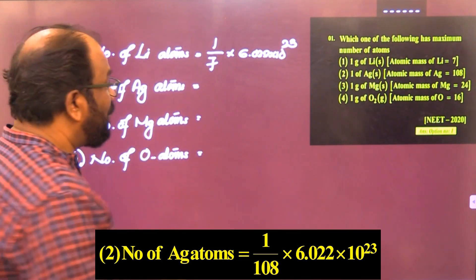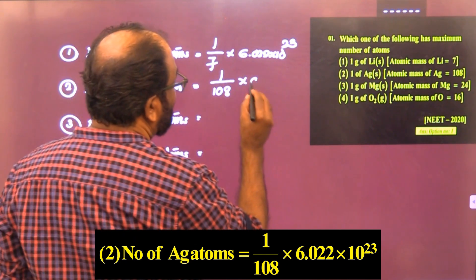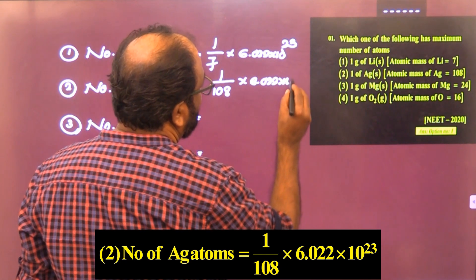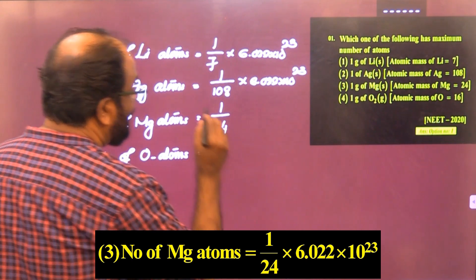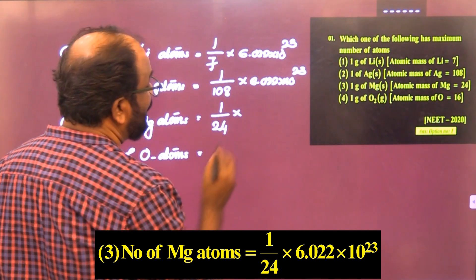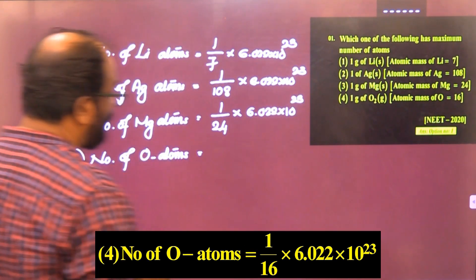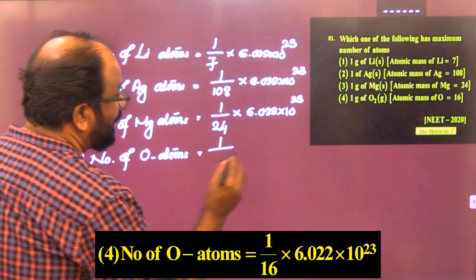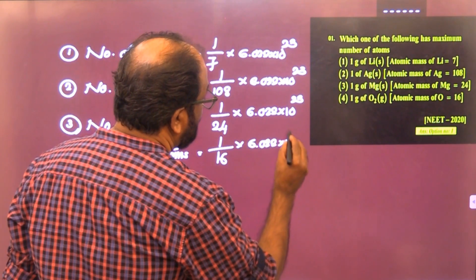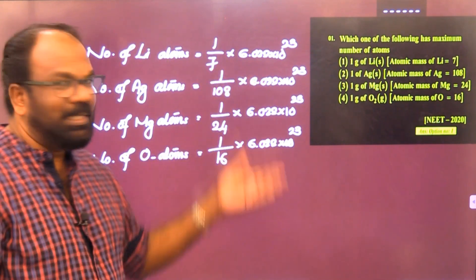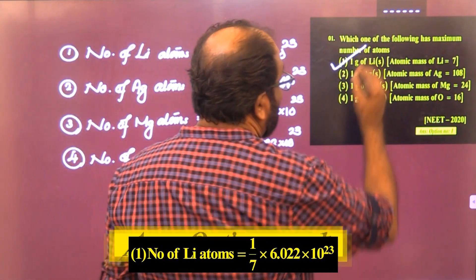In option 2: one gram of silver → (1/108) × Avogadro's number gives the number of silver atoms. In option 3: one gram of magnesium → (1/24) × Avogadro's number gives the number of magnesium atoms. In option 4: one gram of oxygen → (1/16) × Avogadro's number. By comparing these values, the maximum number of atoms is in option 1, so the answer is option 1.